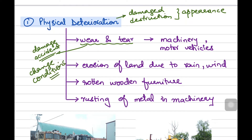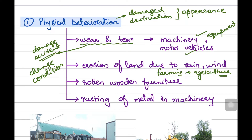Assets that can come under this include machinery being used in the premises, motor vehicles, or some other equipment. Now, what else can come under physical damage of non-current assets? If the business is of farming — let's say agricultural business — then a very important non-current asset that business will hold is its land. Of course, crops, vegetables, or something else will be grown on that land, so the business will be highly dependent on the condition of that land. It can also get damaged because of erosion — either because of rain, wind, or soil particles.